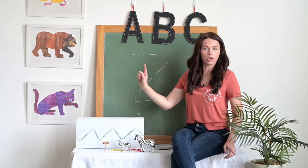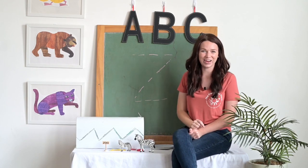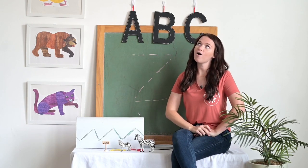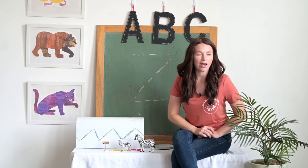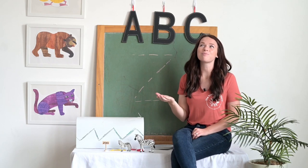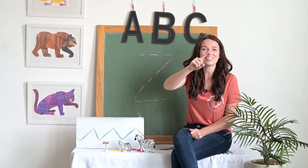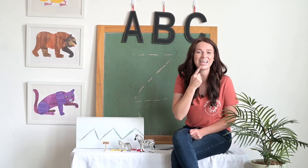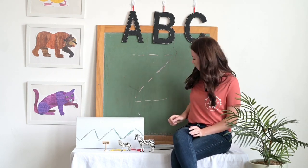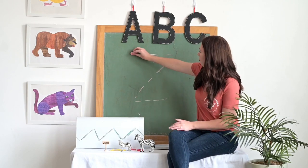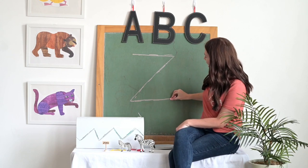Let's say it in a Zorro voice: across, slant down, across Z. What about a zebra voice? I wonder what a zebra sounds like — maybe a little bit like a horse: across, slant down, across Z. Now let's trace it together on the blackboard: across, slant down, across Z.